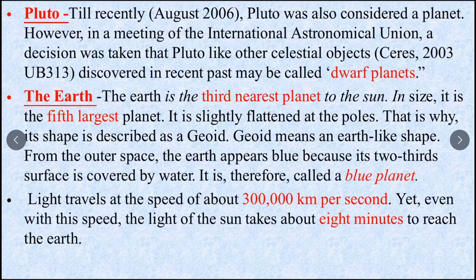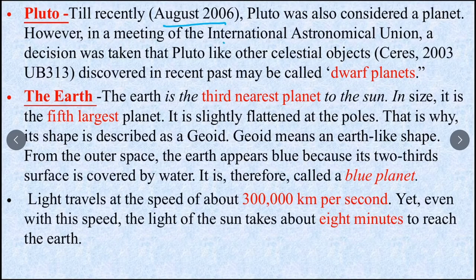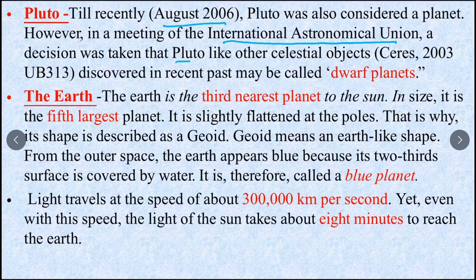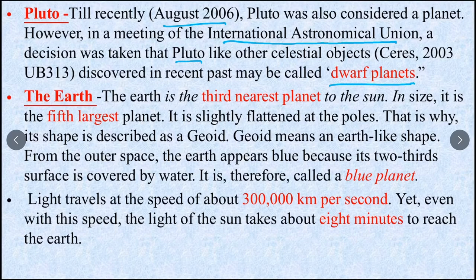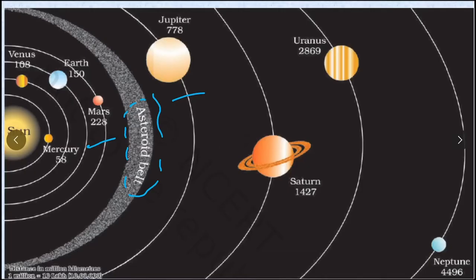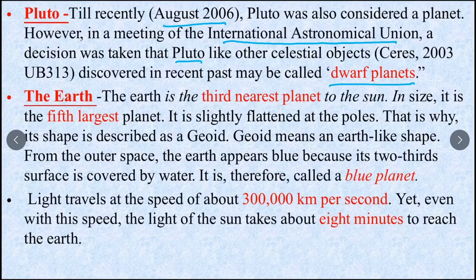Pluto. We studied that Pluto was in our solar system. But in 2006 the International Astronomical Union said that Pluto is not a planet in our solar system. Now we say dwarf planets. After Neptune, there are small bodies that are floating around the sun. They are called dwarf planets.